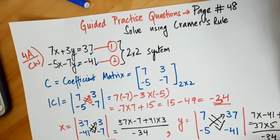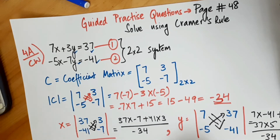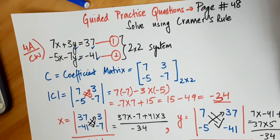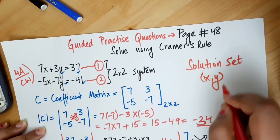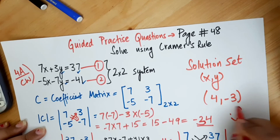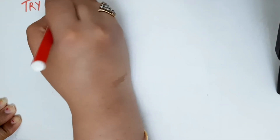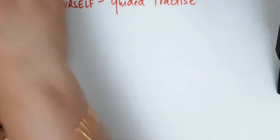So we have solved the system of equations using Cramer's rule and the concept of determinants. Your final answer for this question can be written as follows: the solution set is the ordered pair (x, y), where the value of x is 4 and the value of y is −3. Check your answer and now I am going to give you a question to try yourself, again from your math book guided practice — try it yourself and check your understanding.